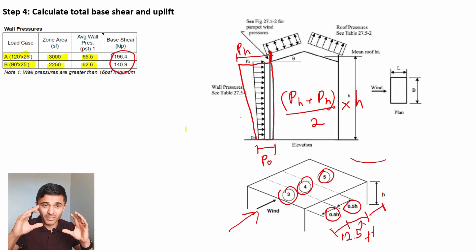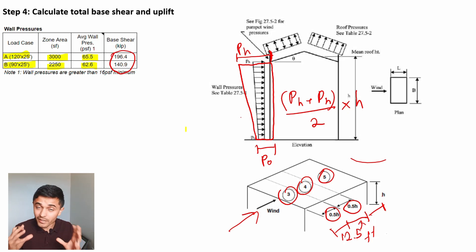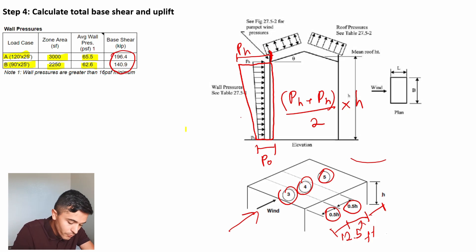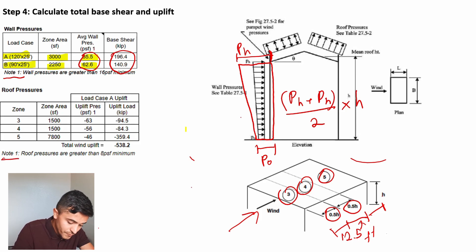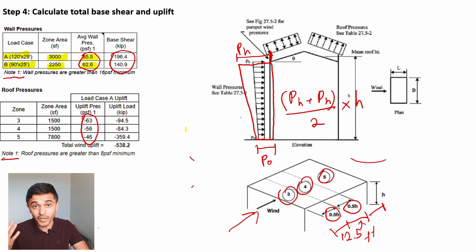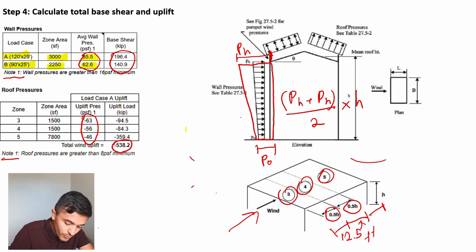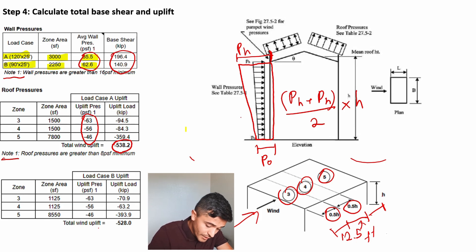For the minimum pressure checks: wall pressures need to be at least 16 PSF and roof projection pressures at least 8 PSF. In our case, by inspection, the wall pressures are all greater than 16 PSF so no separate calculation is needed. Similarly, all roof pressures are greater than the 8 PSF minimum, so the calculated pressures control. Then I calculate the total uplift by summing all zones, and do the same for load case B, getting a total wind uplift very similar to load case A as expected.